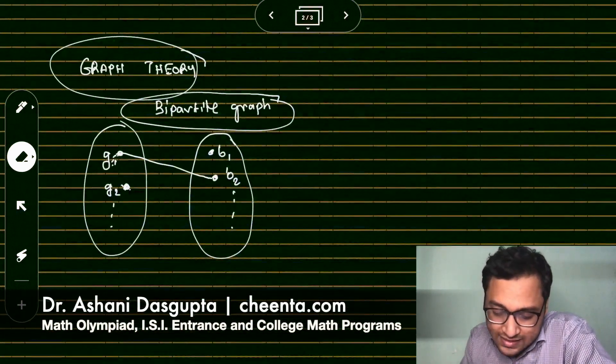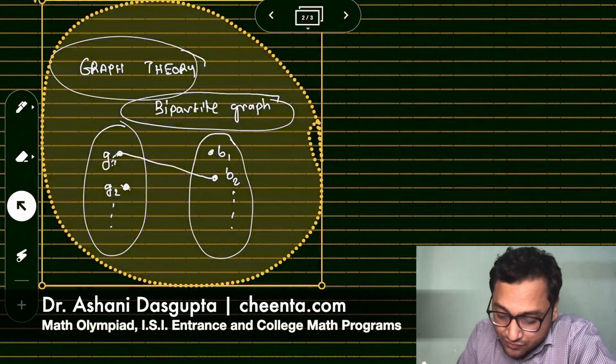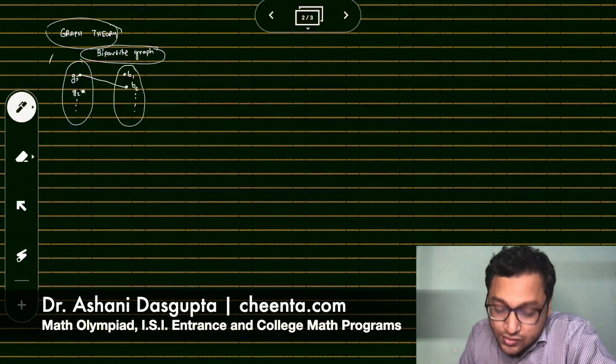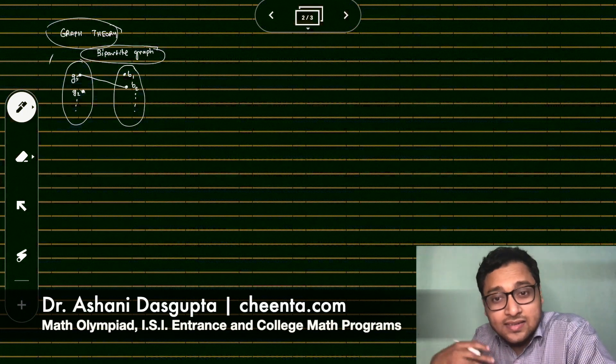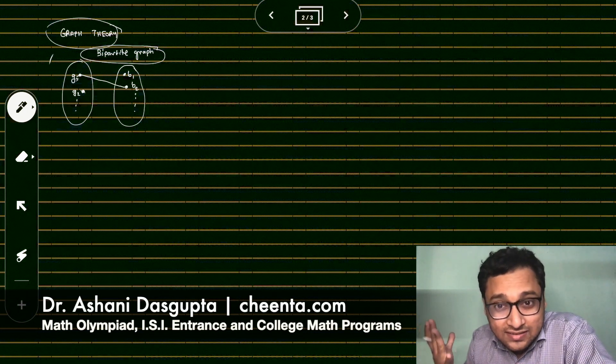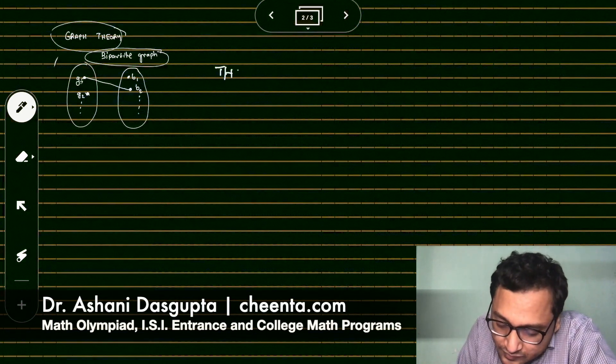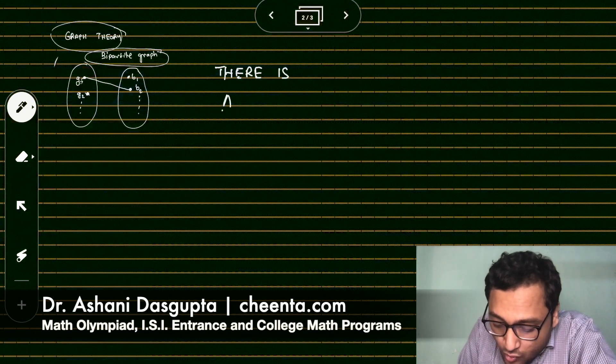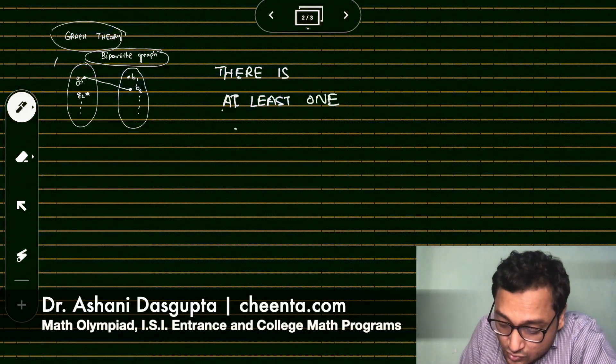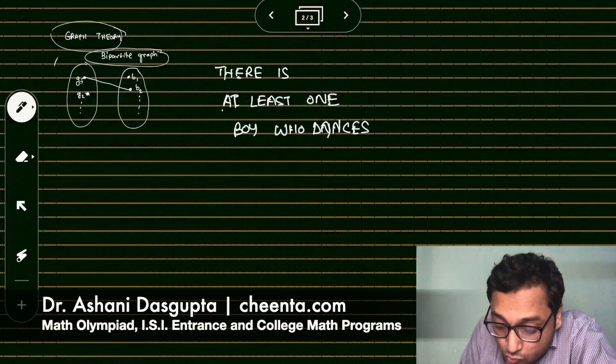So now let's see how we can use extremal principle. We understand how we have modeled this using graph theory. How we can use extremal principle to solve this problem. So since no boy dances with every girl, and of course they are dancing with a finite number of girls, there are finite number of girls and boys in the floor, there is at least one boy who dances with most number of girls.